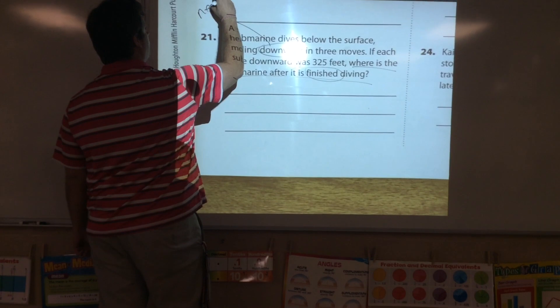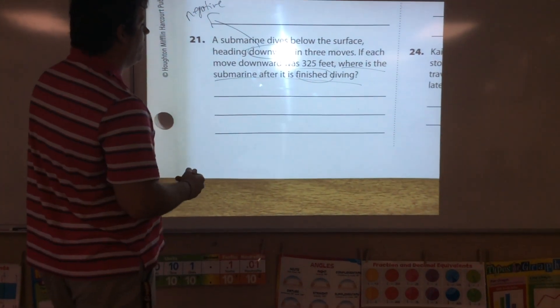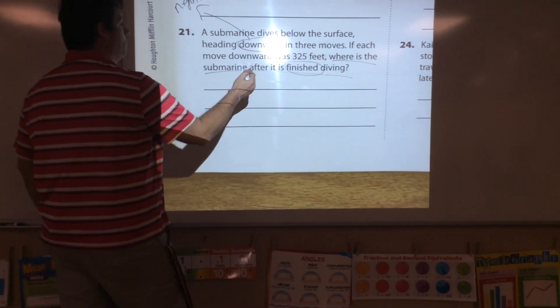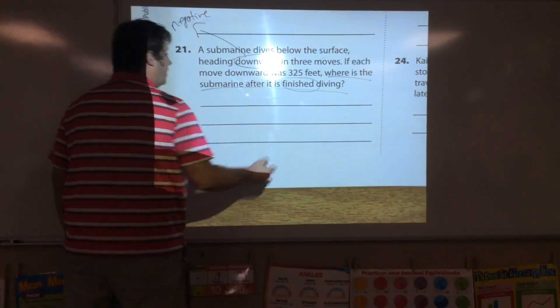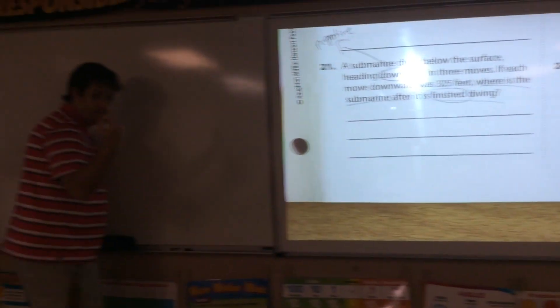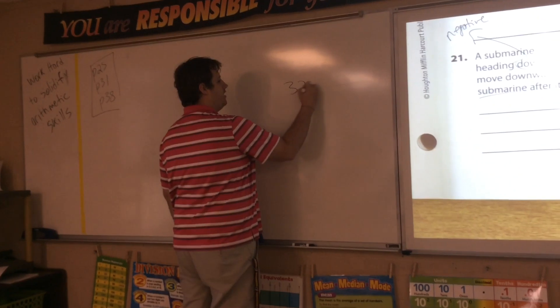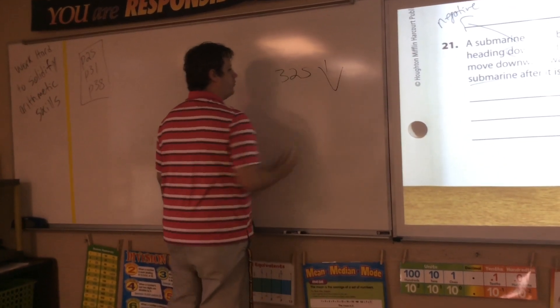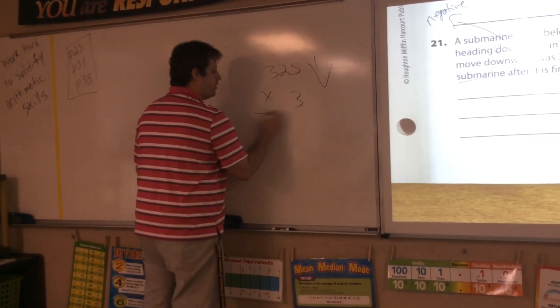Negative means that it's going to have a negative value. Every time it moves, it moves 325 feet. So, 325 feet downward and that happens three times.